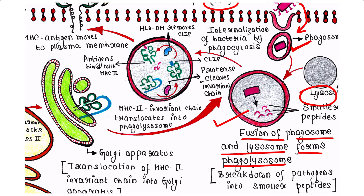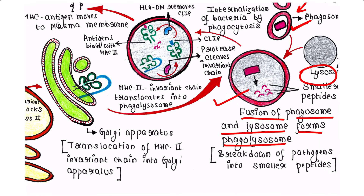The ROS, hydrolytic enzymes, and acidic environment kill and break down the pathogens. The pathogen, which is the whole antigen, is killed and broken down into smaller peptides. These smaller peptides are called fragment antigens. Inside the phagolysosome, the whole antigen — the bacteria — is broken down into fragment antigens. These peptides are 11 to 15 amino acids long.